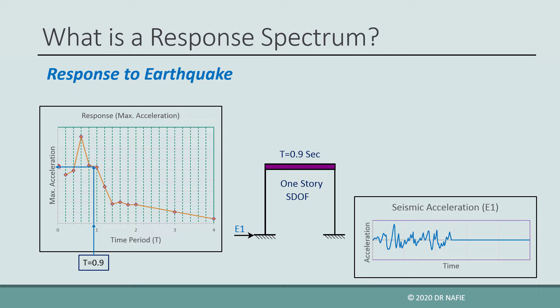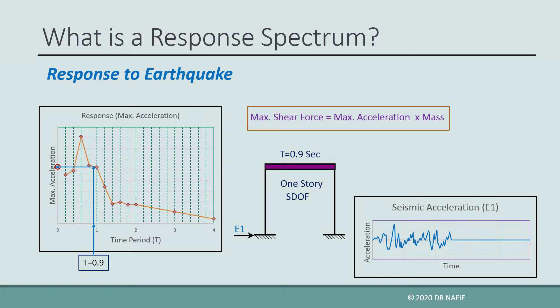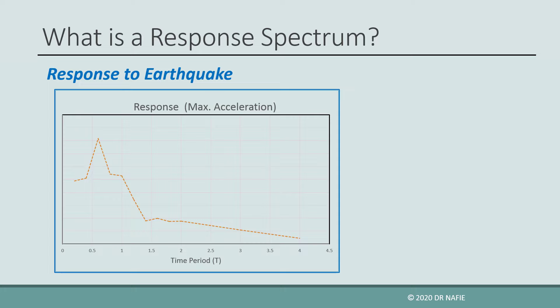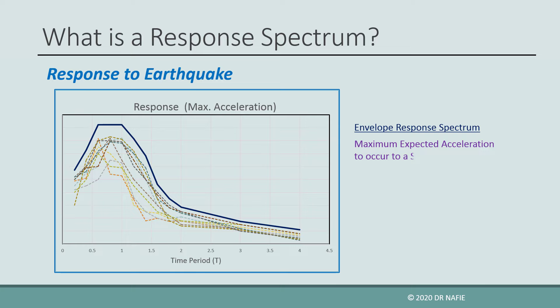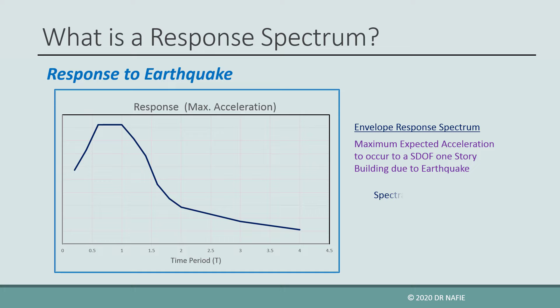The maximum expected shear force can be computed by multiplying the maximum acceleration by the mass of the building. The response spectrum curve constructed previously is specific to the earthquake motion E1. If another earthquake E2 is applied, then a different response spectrum curve will be obtained. In order to use the response spectrum curve in the design at a certain location, we must draw the response spectrum curves for all the earthquakes E1, E2, E3, E4, etc., that are expected to happen in that location, and then draw an envelope response spectrum for design. We call this envelope curve the design response spectrum curve, and we call the maximum acceleration the spectral acceleration SA.